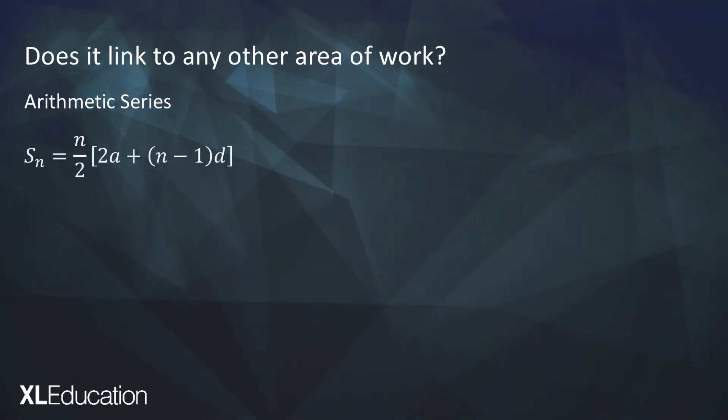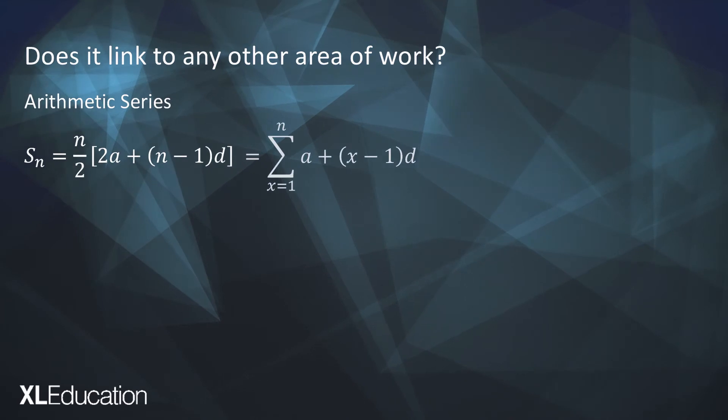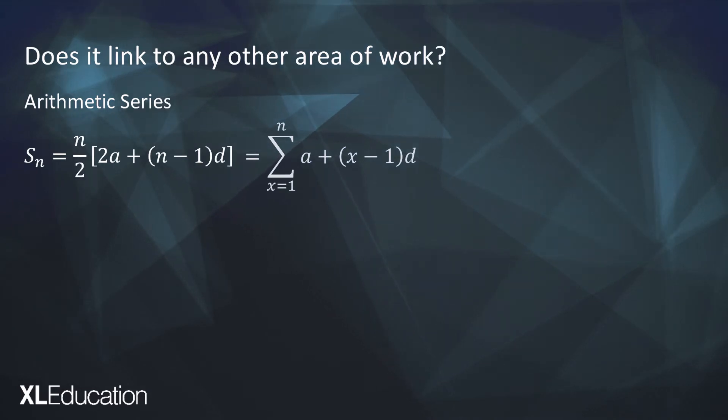How does that work? So for arithmetic series you know that s of n which is the sum of the first n terms of an arithmetic series has a formula. Now interestingly we can write that exact same thing in sigma notation where we start at x equals 1, so term 1, we add up all the terms up until term n and the function we use is the same function that we use to generate the terms of an arithmetic sequence.